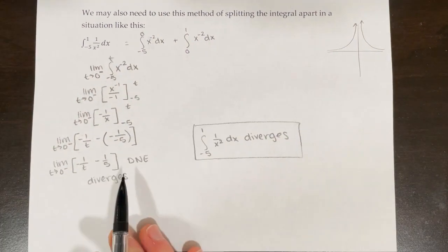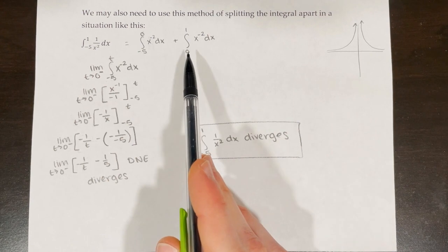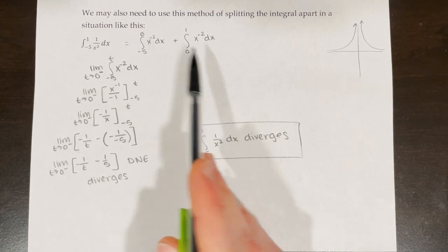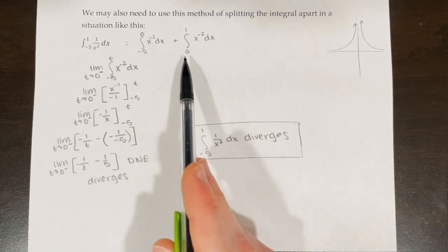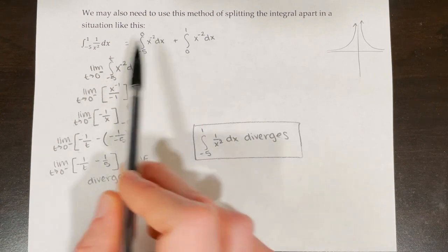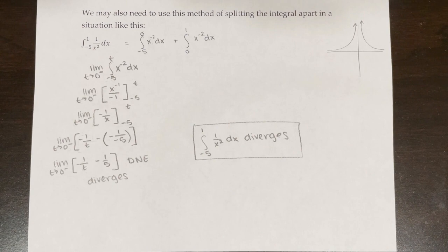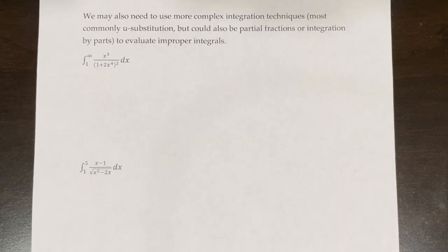If we had gotten an actual number for this portion of the integral, we would have had to evaluate the second one as well to make sure that didn't diverge too. If we got two actual numbers, we would add them together. The rule is that if either of the new integrals diverges, the whole thing diverges. We may also need to use more complex integration techniques — most commonly u substitution, but it could also be partial fractions or integration by parts to evaluate these types of improper integrals.